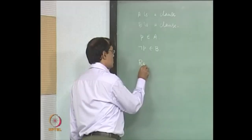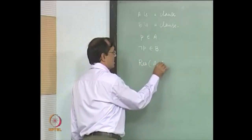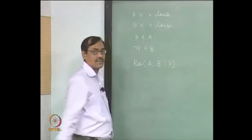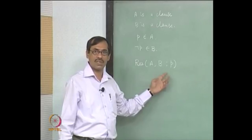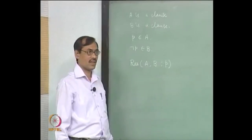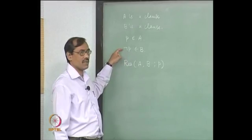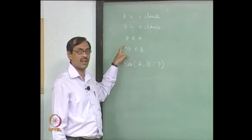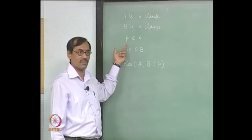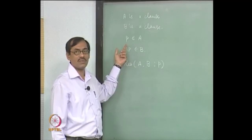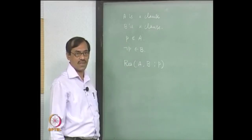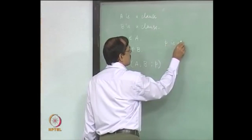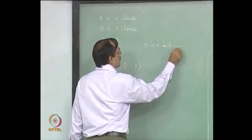We say that the resolution of A and B — these two clauses — with respect to this literal p. Sometimes, if it is a variable, we say with respect to the variable p. P is called a biform variable here. If p belongs to A and not-p belongs to B, it is called a biform variable or a biform literal. Biform literal is more appropriate, but once you know p is a variable, you also say p is a biform variable. We say, as a comment: p is a biform literal.